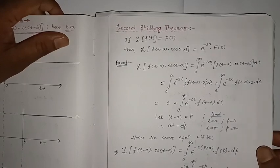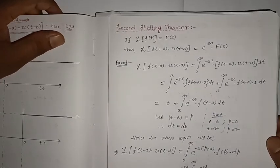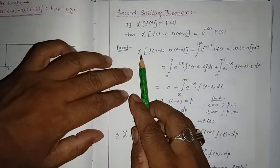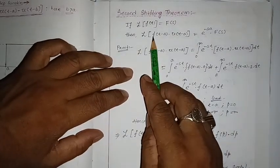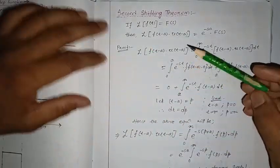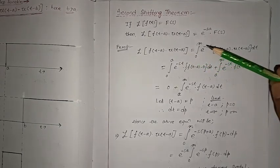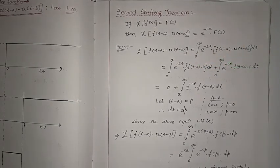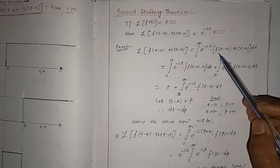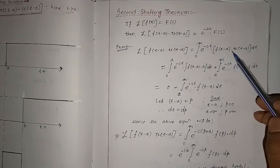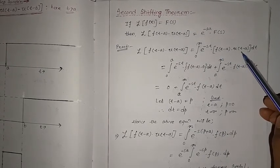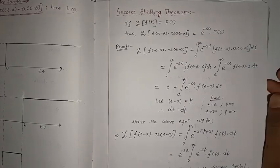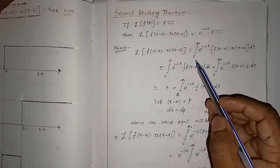That is what we are going to prove first, then discuss corresponding numericals. The Laplace transform of f(t minus a) into u(t minus a) in general can be written as the integral from zero to infinity of e to the power minus st into f(t minus a) into u(t minus a) dt.